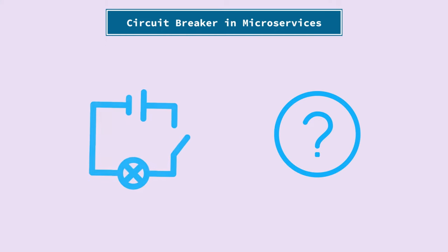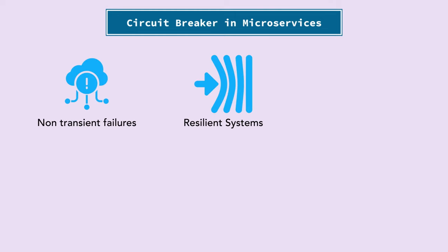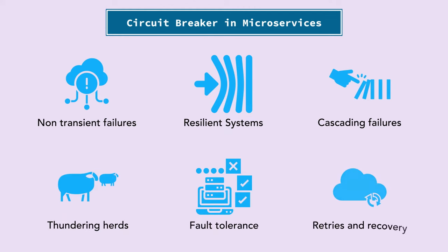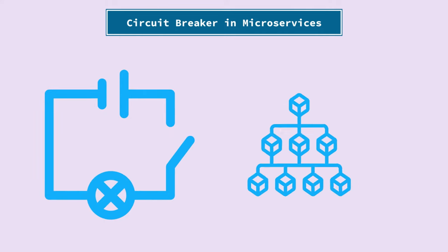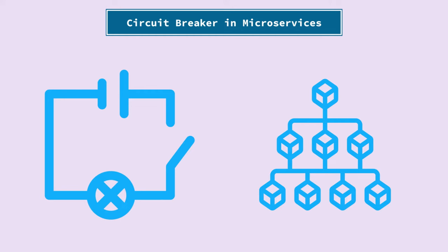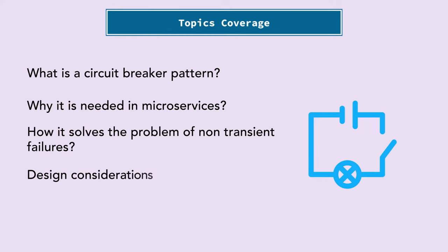Hello and welcome to Sudocode. In today's video, we are going to understand what is circuit breaker in microservices. Whenever we talk about circuit breaker, we also hear terms like non-transient failures, resilient systems, cascading failures, thundering herds, fault tolerance, retries, recovery, and so on. Some of these terms help us understand the concepts behind the circuit breaker pattern, but sometimes they can also confuse us. We will cover the definition of a circuit breaker pattern, why it is needed in microservices architecture, how it solves the problem of non-transient failures, and some design considerations, including pseudocode and state transitions.